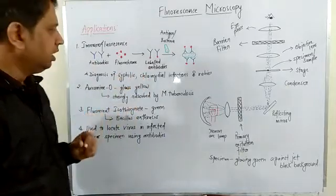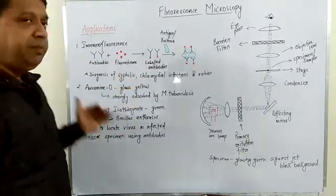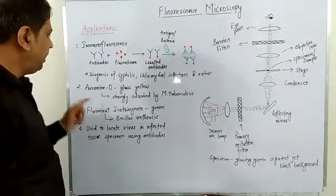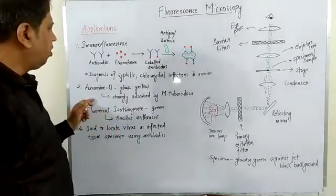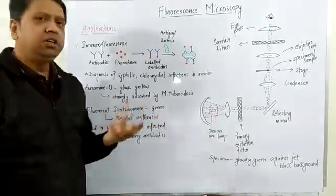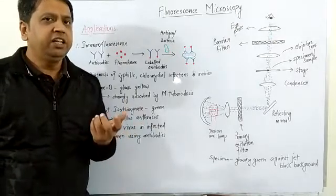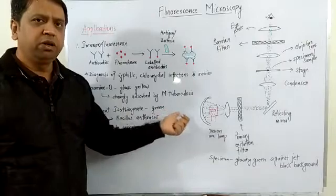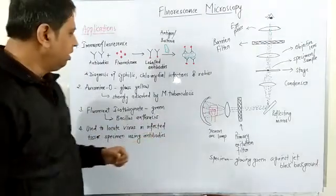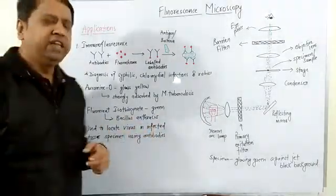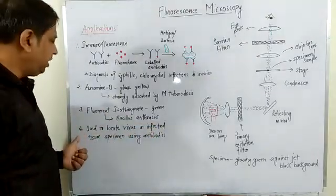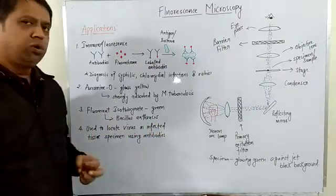Fluorescence microscopy can also be used to identify Mycobacterium tuberculosis. Using auramine O dye, the bacteria absorb the dye and glow in a yellow color. Similarly, Bacillus anthracis can be identified using fluorescein isothiocyanate (FITC) dye, which causes it to glow in a green color.